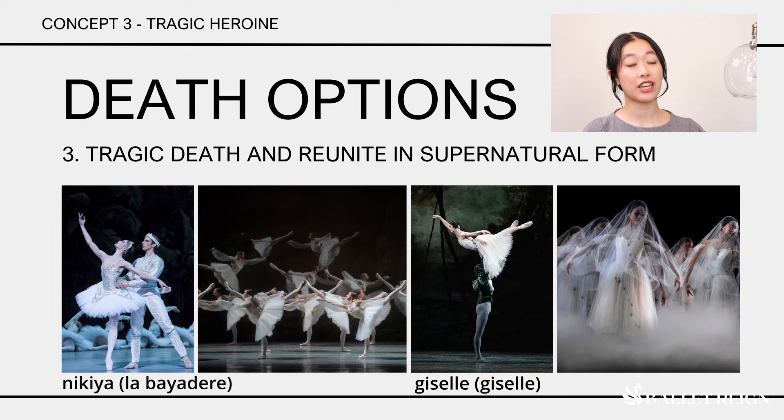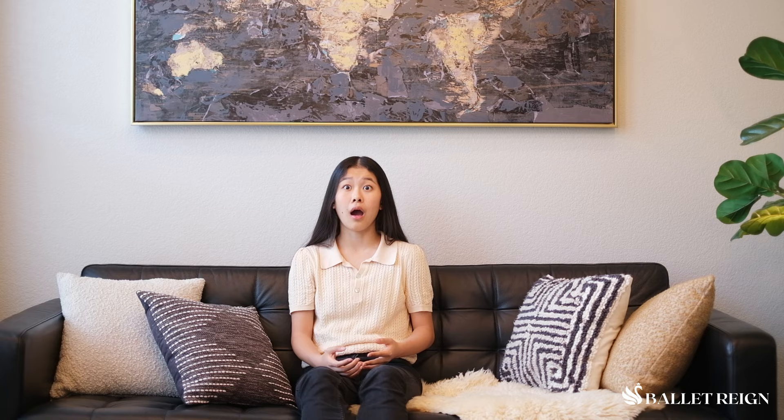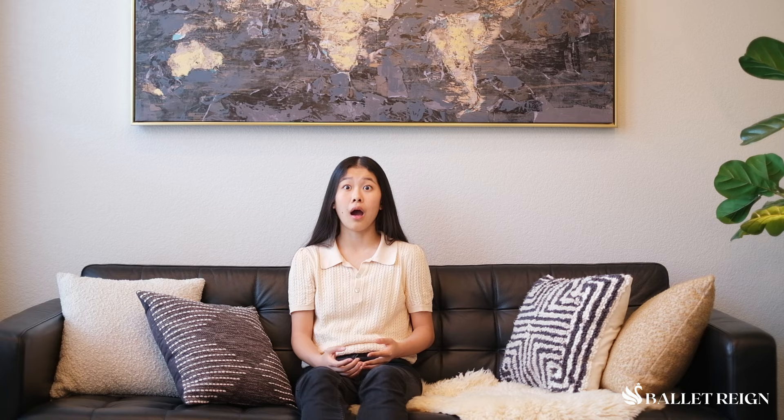Option 3 is to die a tragic death, and your beloved can meet you again in your supernatural form, along with 50 other identical supernatural beings. I always advise this option, because it opens up wonderful opportunities for a white act, and that's always good for the agency.